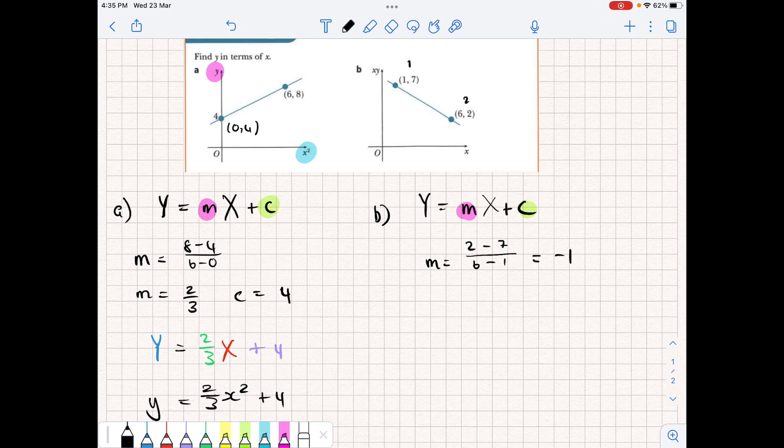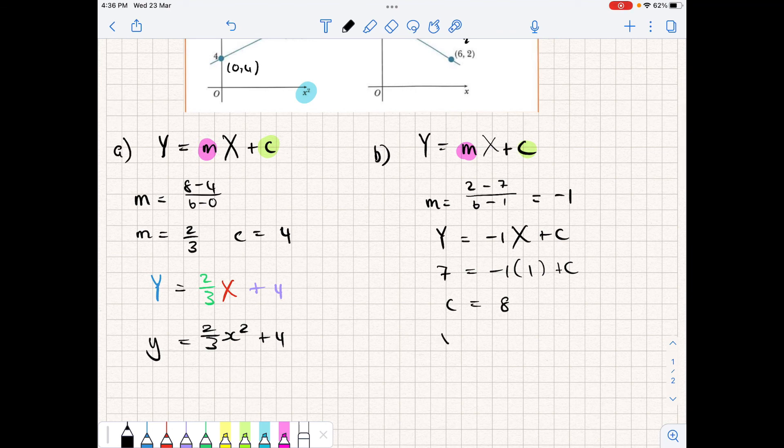All right, so this time the y-intercept is not obvious, so we're going to have to use a different method. So we're going to substitute a coordinate in to calculate it. So let's just write the equation we have so far: Y = -1 times X + c. So using either of the two coordinates, we can use (1, 7). So 7 = -1 times 1 + c. So we get c equal to 8.